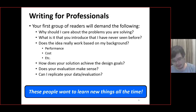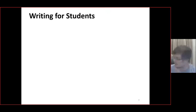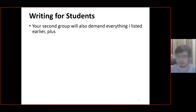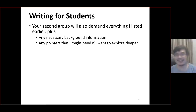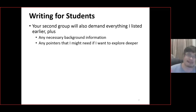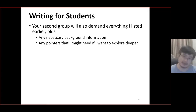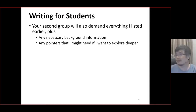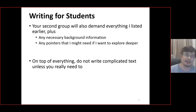The second group is students. When you write for students, you demand everything from the first group plus any necessary background so they can understand what they're reading, and any pointers they need if they want to explore deeper. That's actually one of the primary reasons you write the related work section — it covers things in the area, like orthogonal work that addresses something related but not exactly the same problem.